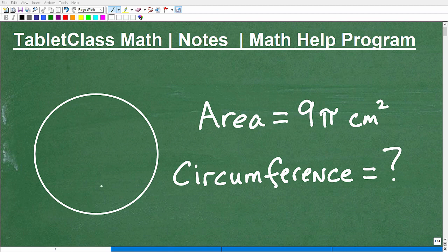Okay, so we have this circle here, and we know that the area of the circle is 9 pi centimeters squared. But we're not interested in the area, because we're obviously given the area of the circle. What we're interested in is the circumference. So what is the circumference of this circle, or what is the circumference of a circle that has an area of 9 pi centimeters squared?